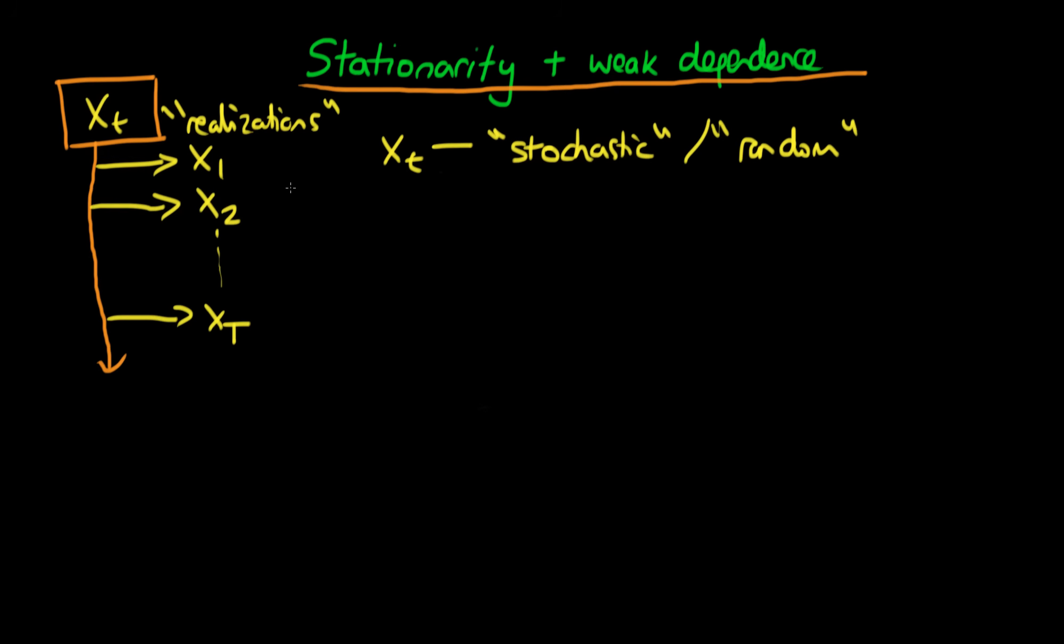Random in this context doesn't mean that the value which X can take on can be any value. It just means that before we actually see any of these individual realizations we don't know with certainty what value the process is going to take on. Xt is not a deterministic process whereby we can know what values the process takes on in the future with certainty.